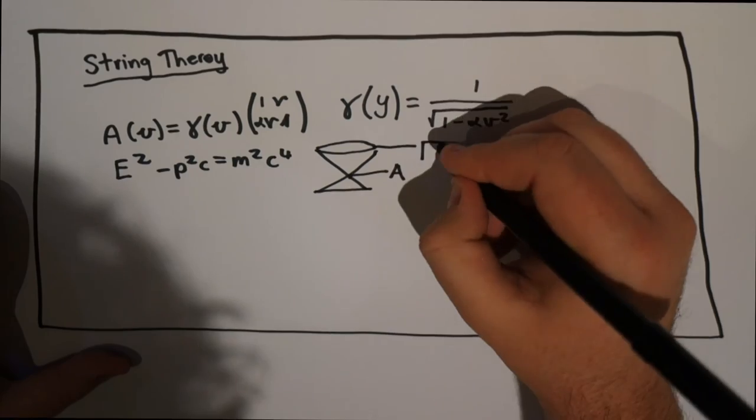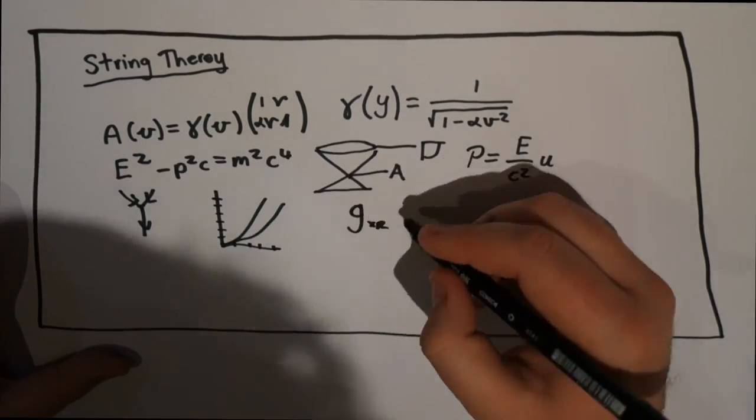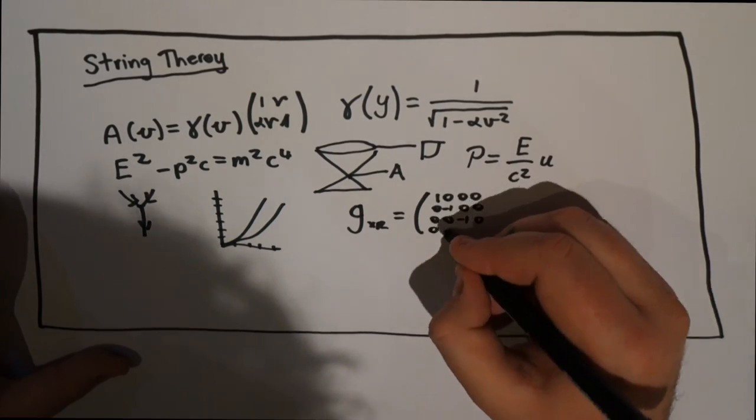Michio Kaku, father of modern day string theory, explains that each of the 24 modes in the Ramanujan theta function corresponds to a physical vibration of a string.